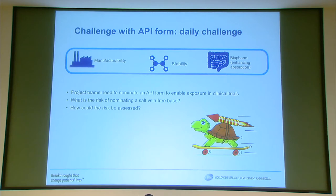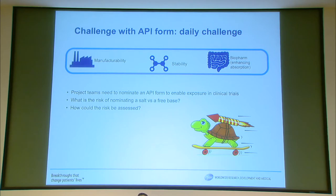The challenges with API form, and questions we have every day on project team settings, is how to accelerate our projects. The timeline has been reduced from 10 to 11 years to only five years in some programs. This is really a challenge because we need to meet three pillars: manufacturability, stability, and because it's oncology, oral route of administration — so we're talking about biopharmaceutics.